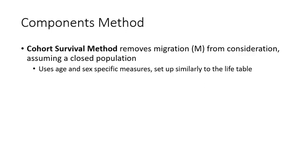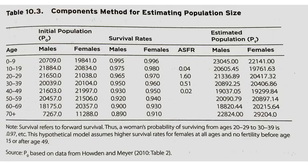The survival method is set up similarly to a life table by breaking the population down into different age and sex specific sub-populations, and then calculating interval estimates for each one.